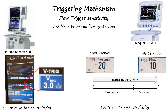Settings between negative 20 and 0 represent a pressure trigger, with values indicating negative pressure in centimeters of water — for example, negative 20 corresponds to a pressure trigger of negative 20 cmH2O. Settings between 0 and 10 represent a flow trigger, requiring a percentage of the bias flow to be deflected by the patient. A setting of 0 requires 100% flow deflection, while a setting of 10 requires only about 1% of the bias flow.